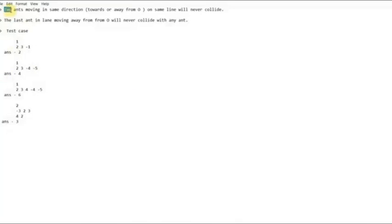The thing you have to remember is that two ants moving in same direction, either away from zero or towards zero, will never collide. This should make sense because the speed of all the ants is same. Therefore no ant can ever overtake any other ant, therefore no collision can occur. Two ants moving in same direction on same line will never collide.